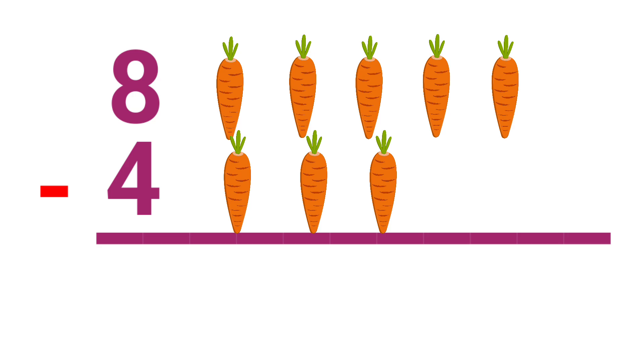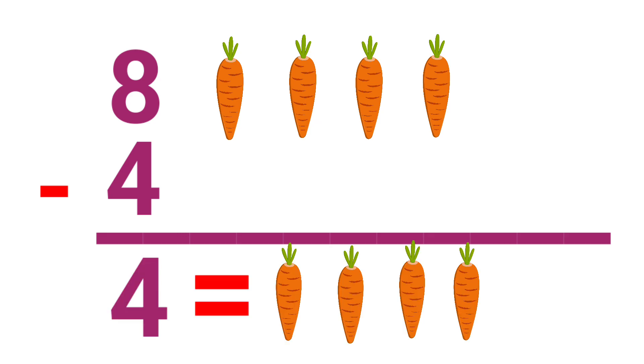The sum is 8 minus 4. There are 8 carrots. Let's count it. 1, 2, 3, 4, 5, 6, 7, 8. In this 8 carrots, a bunny eat 4 carrots. So remaining carrots are 4. So the answer is 4. 8 minus 4, the answer is 4.